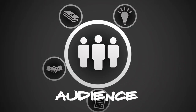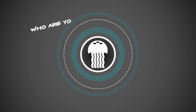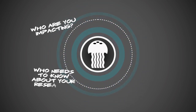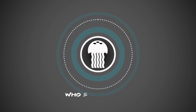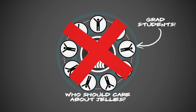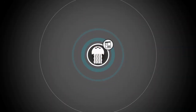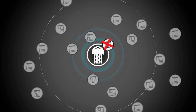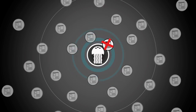You've decided to tackle audience. The first thing you need to figure out is who are you impacting with your broader impact — who needs to know about your research? If you're working on jellies, ask yourself who should care about jellies. Grad students? No. Think bigger than grad students. And no, you can't just throw up a website and be done with it — there are millions of websites out there that no one looks at.